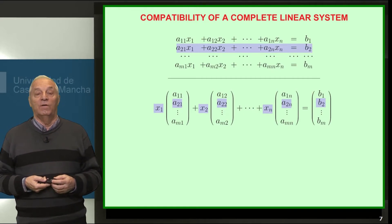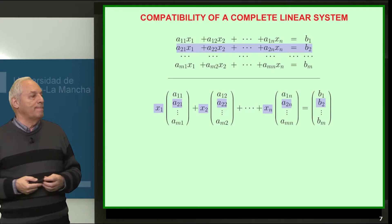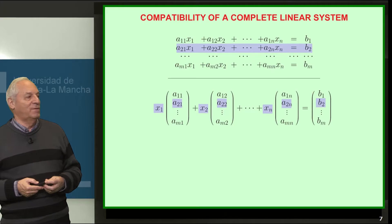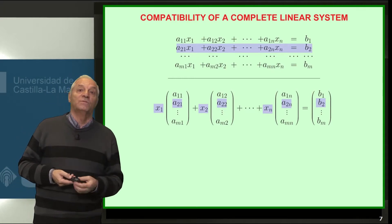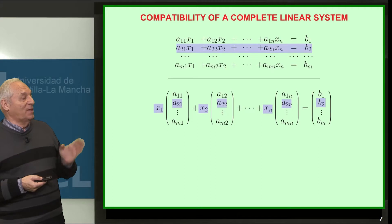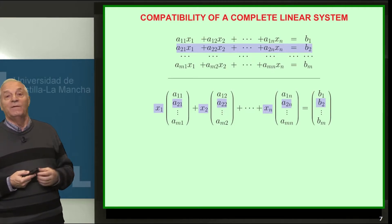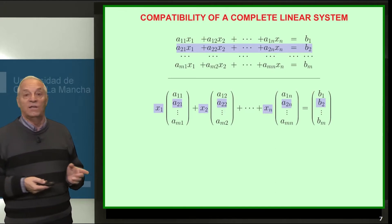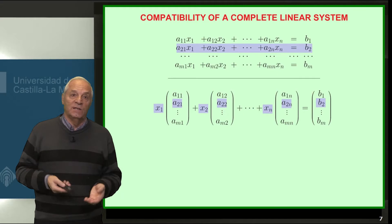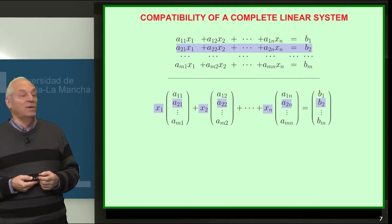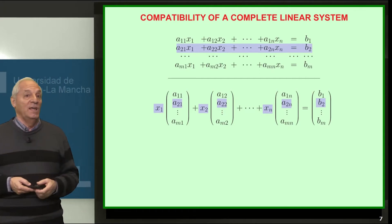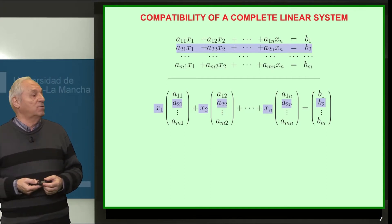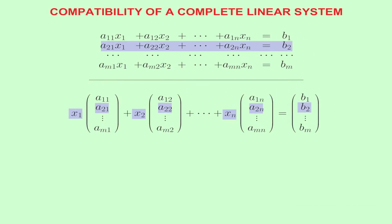Therefore, the top system will have a solution if and only if the bottom system has a solution. What is the bottom system saying? It is telling us that the vector of independent terms (b1, b2, bn) is a linear combination of the column vectors of the coefficient matrix, with coefficients x1, x2, xn. If the solution exists, then the vector b belongs to the linear subspace generated by those column vectors. If the system is incompatible, that linear combination will not exist.